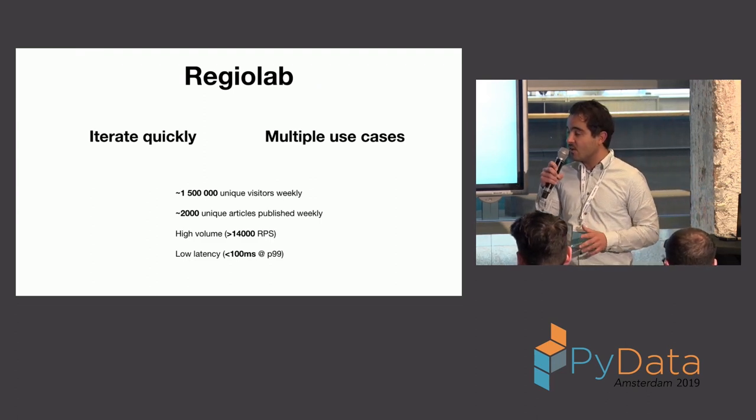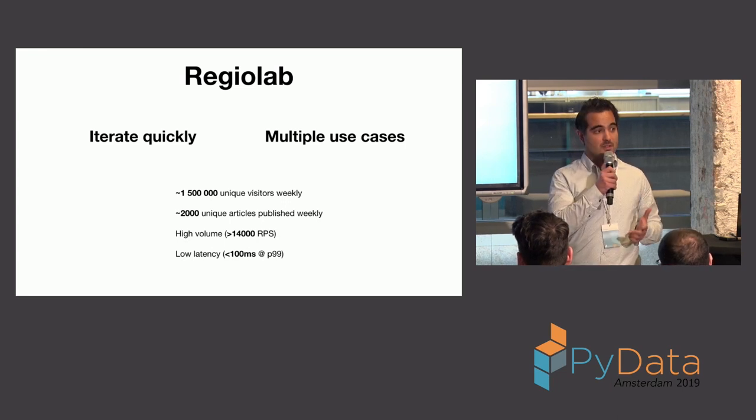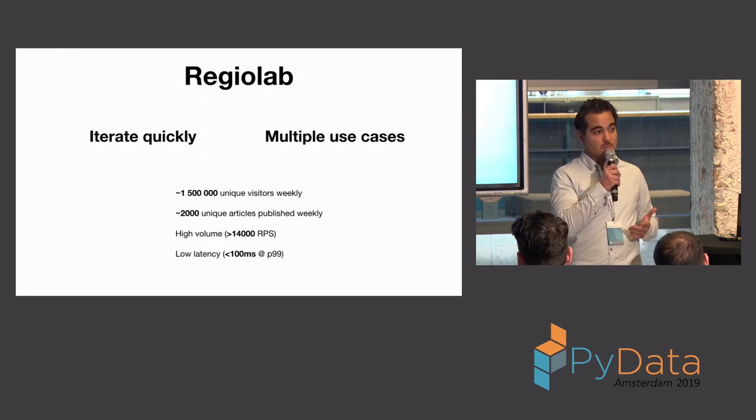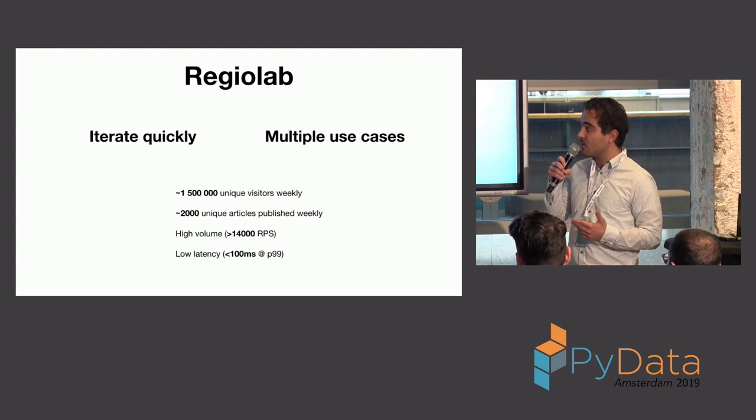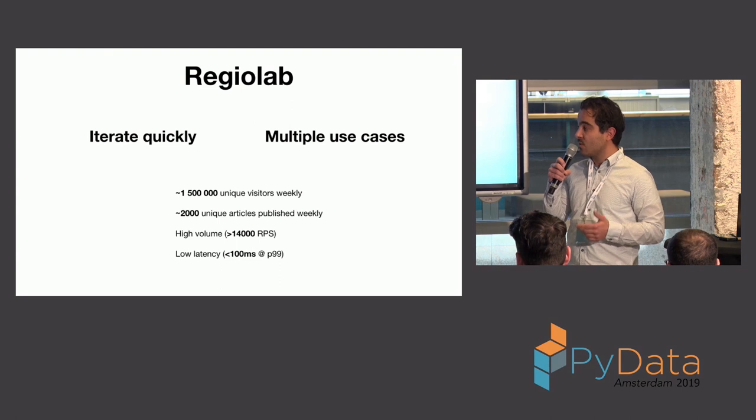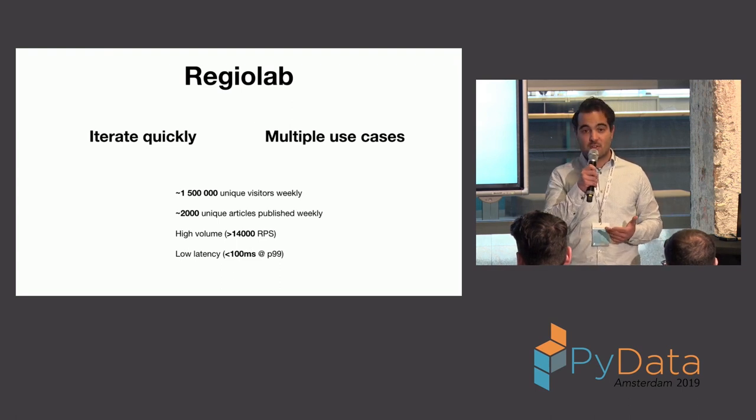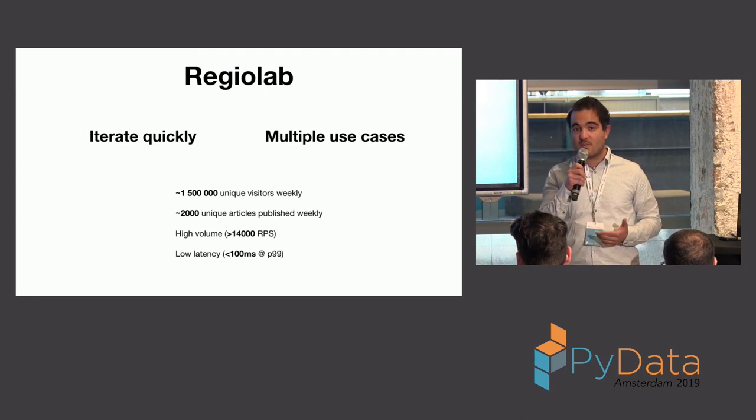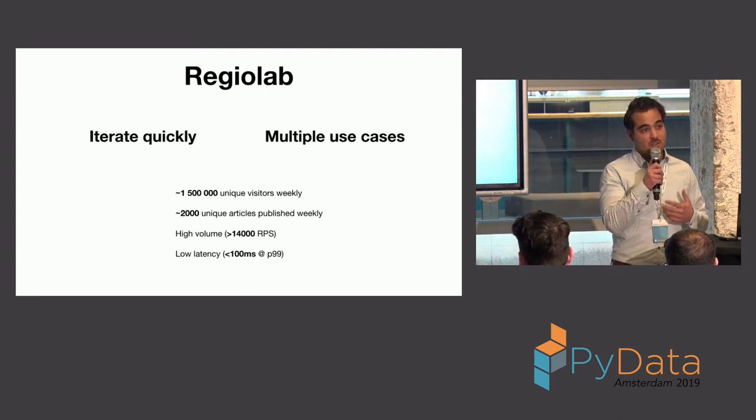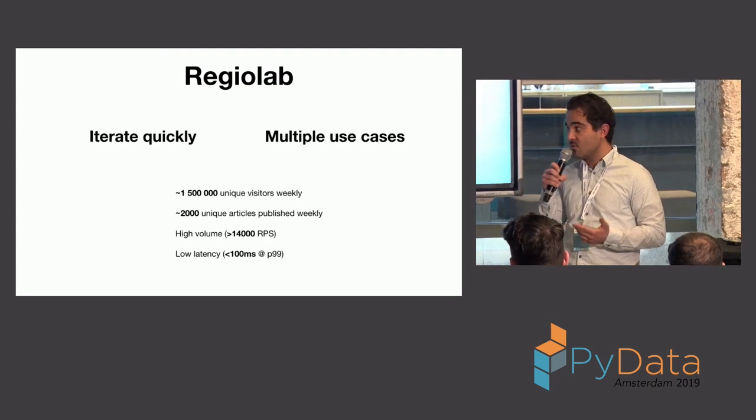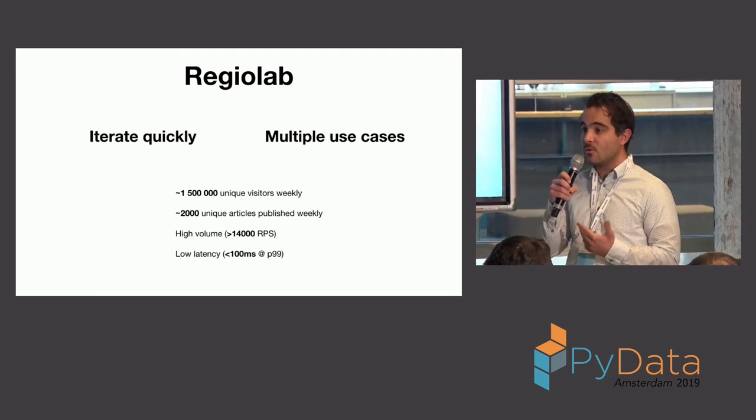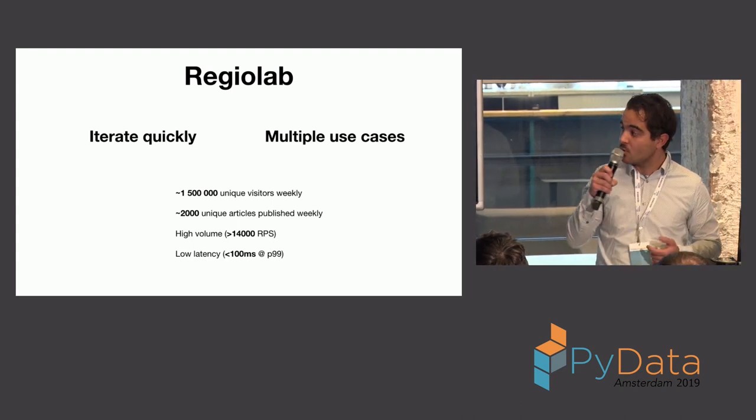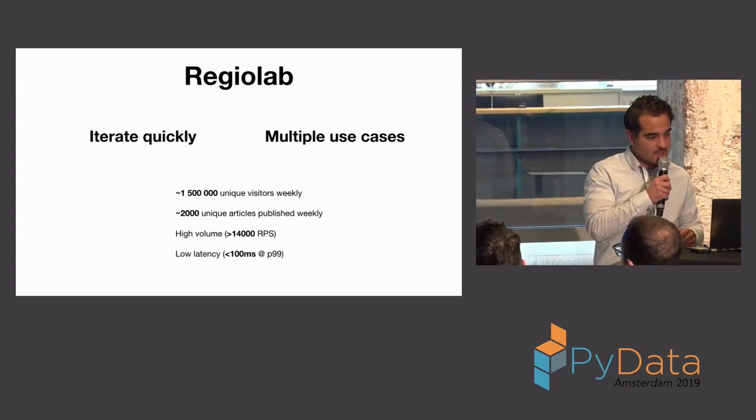Now, another few small details when you think of regional broadcasters or regional news, you might make the mistake of thinking that it's small volume, but in reality, we see about 1.5 million unique visitors every week, and there's about 2,000 articles being published. We also have a lot of peaks in our traffic because as push notifications go out, we can see that peaks of 14,000 requests per minute are not unusual. It says RPS, but that should be RPM, actually.